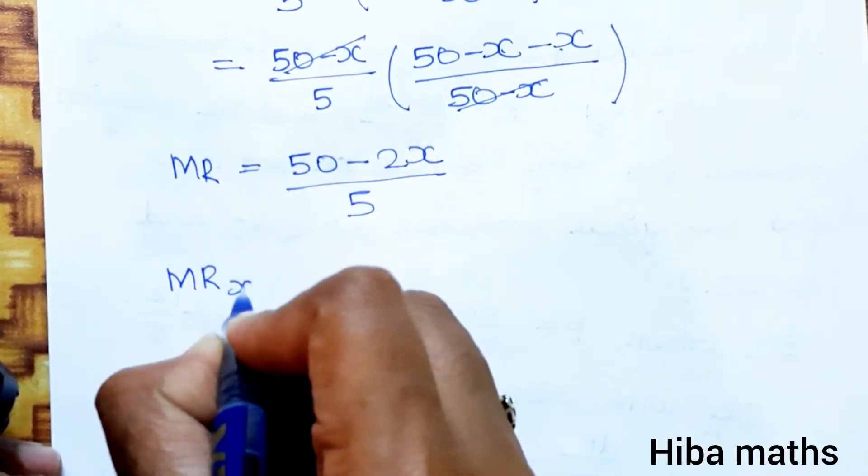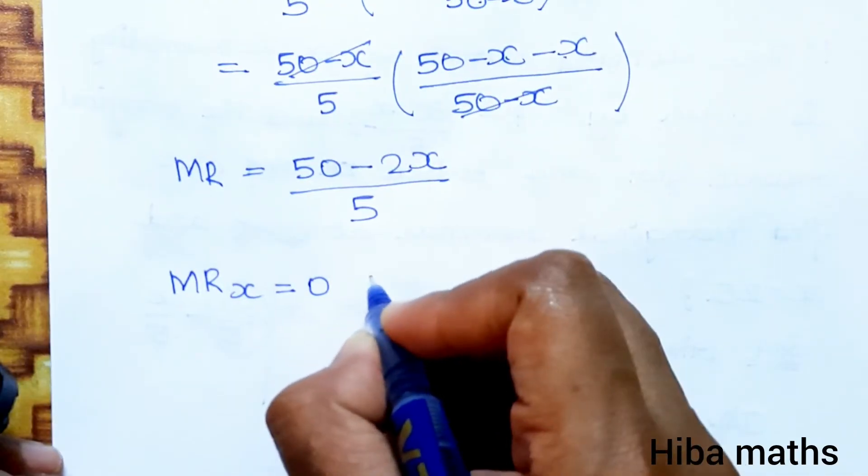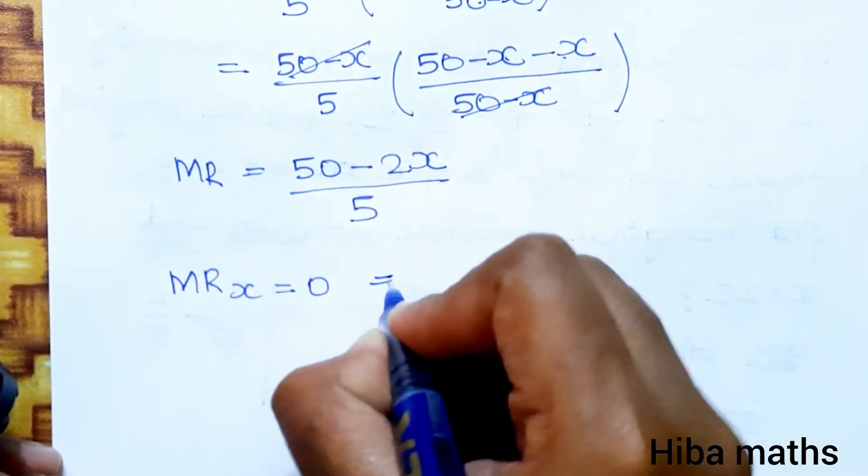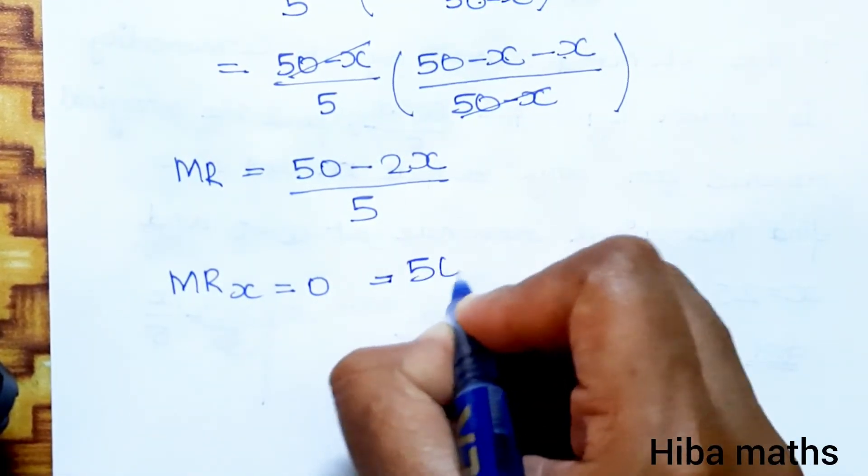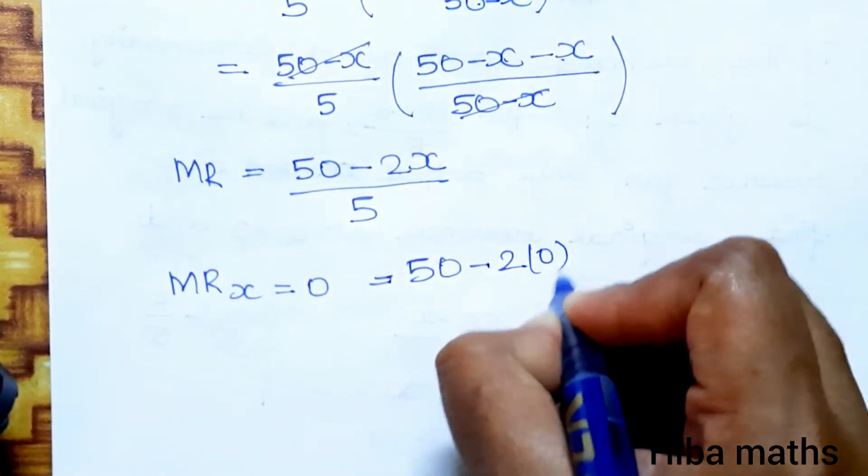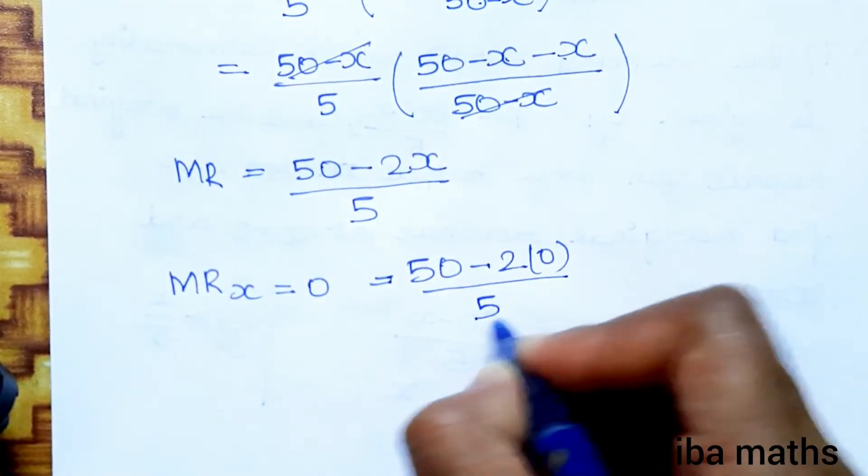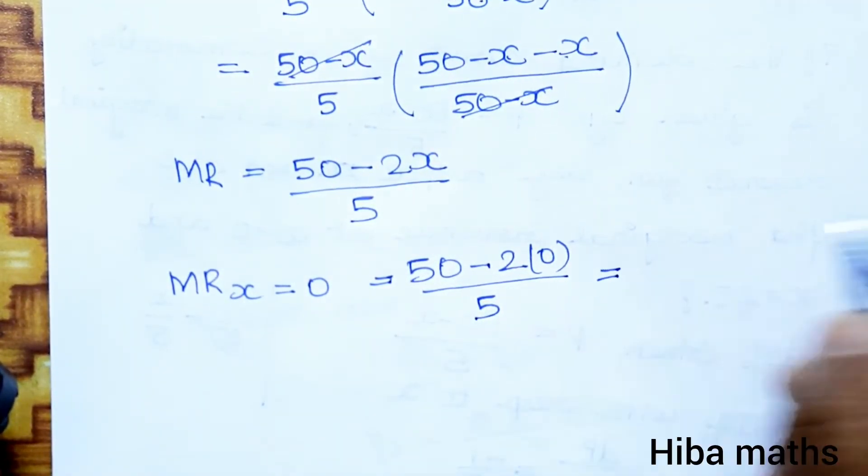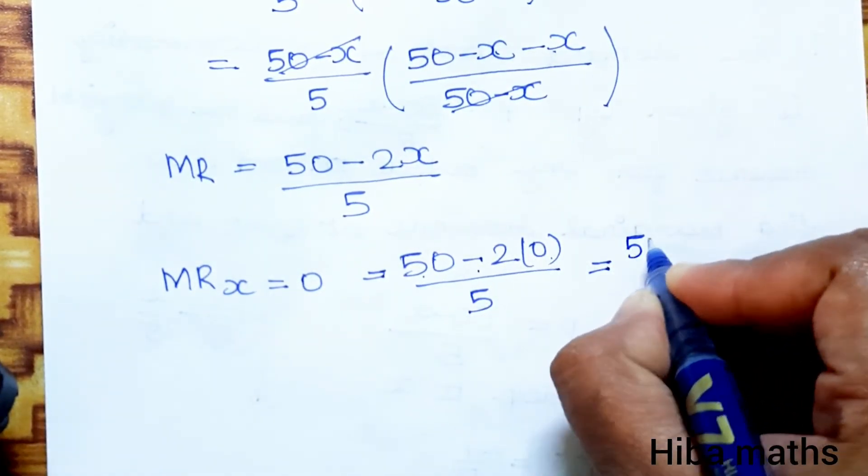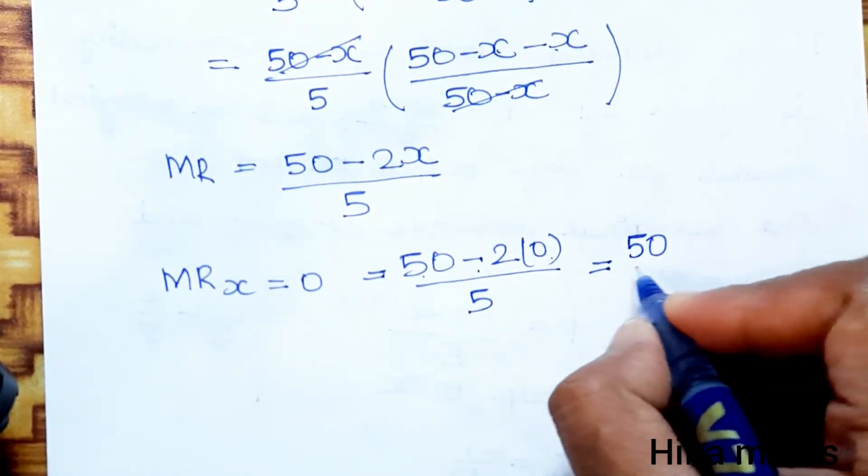Now let's find marginal revenue when x equals 0. MR at x equals 0 equals 50 minus 2 into 0 divided by 5. That equals 50 minus 0, which is 50, divided by 5 equals 10. So marginal revenue when x equals 0 is 10.